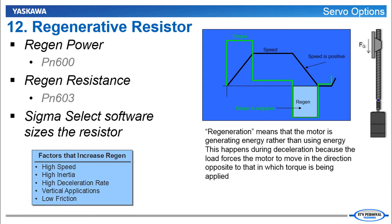Let's move on to regenerative resistor configuration. This will be important again for vertical loads. And regeneration means that the motor is generating energy rather than using energy. This happens during deceleration when you're stopping. Because the load can force the motor to move in the direction opposite to that in which torque is being applied. Consider this speed diagram. And that this vertical load would be moving downward and then stopping. So we have here the speed it goes to a certain speed and then decelerates. During that deceleration it's going downhill if you would. And that negative torque while the motor is moving forward produces what we call regeneration or just regen for short.